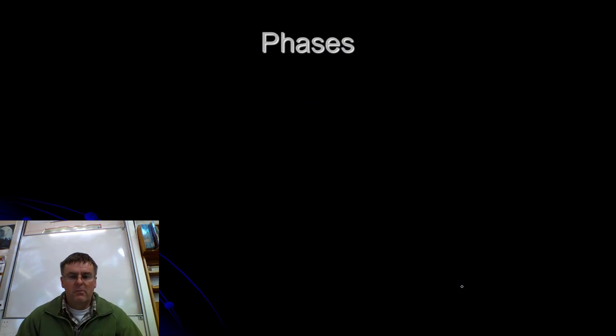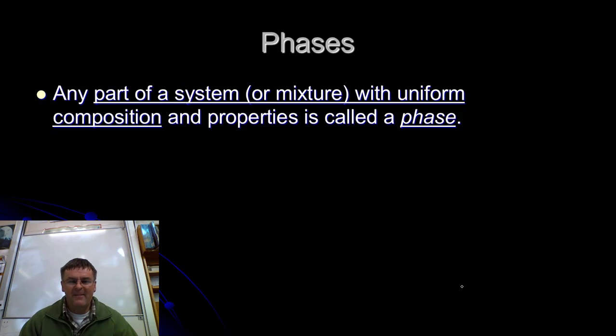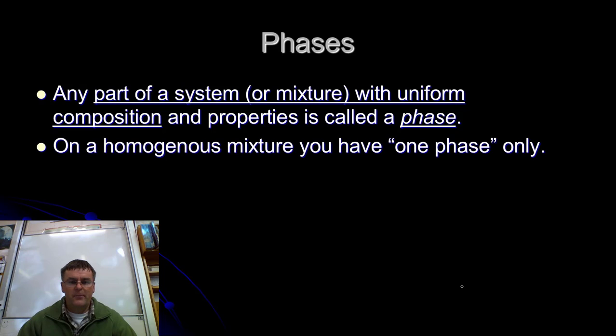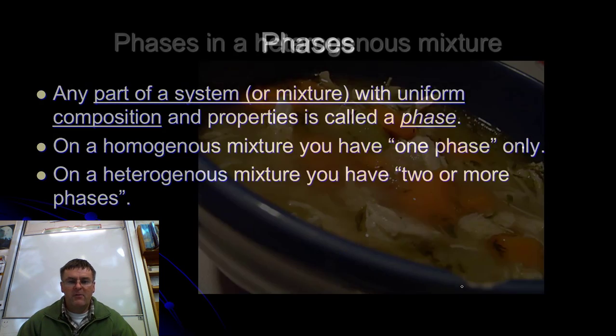Phases. Remember phases of matter? Yes? No? Maybe? Okay. This is what we're talking about. So any part of the mixture with the same properties, same stuff, we call it a phase. So let's have a look. Homogeneous, only one. It's the same everywhere. So it's going to be one phase. So heterogeneous will have more. Let's have a look.